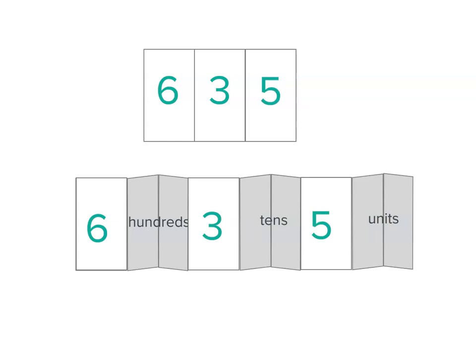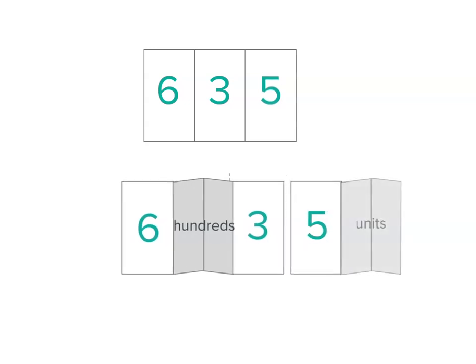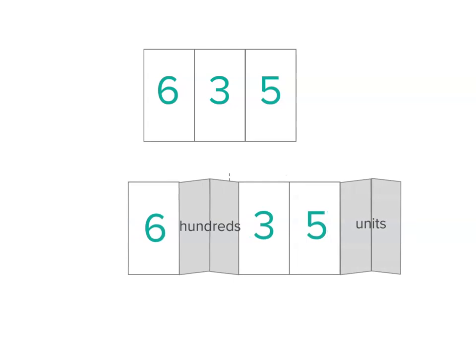Now we can actually close parts of those up and see it differently. What about if we did this? Instead of 3 tens, I'm going to hide the word tens, and that means it looks like I've got 635 units, which I have, because 3 tens has the same value as 30 units plus my 5 units.